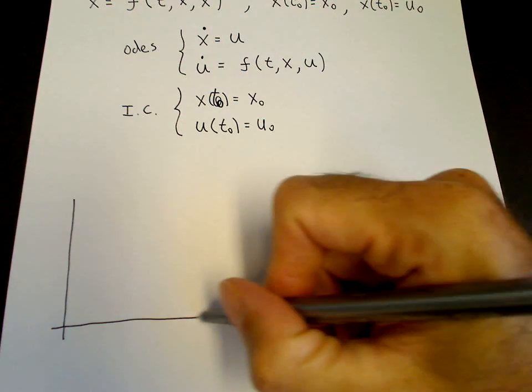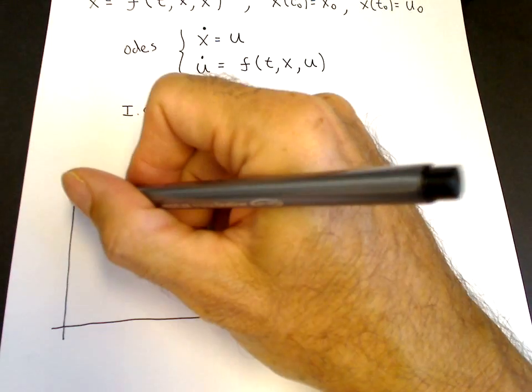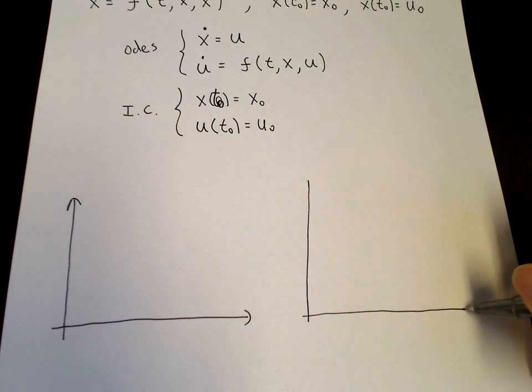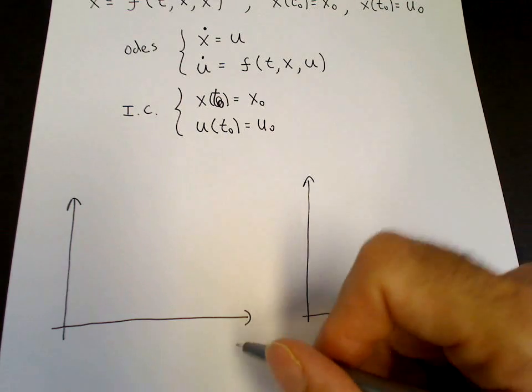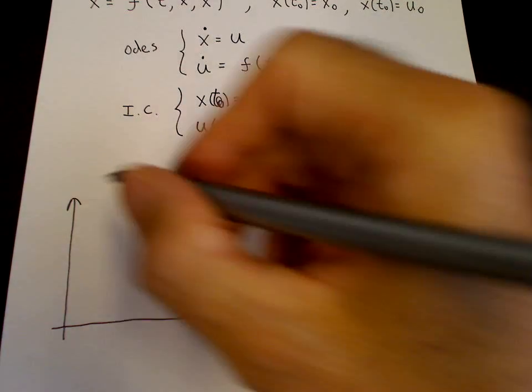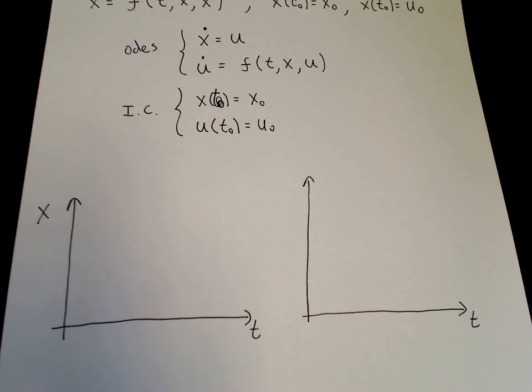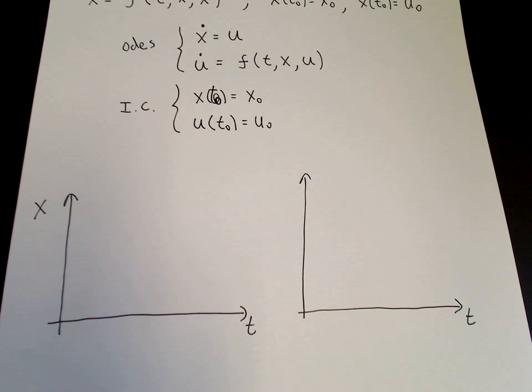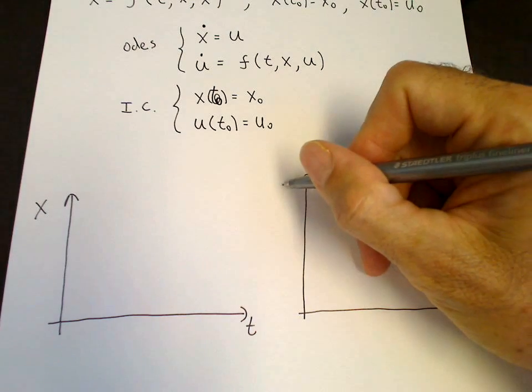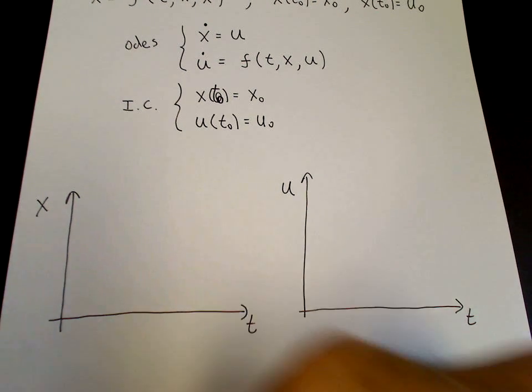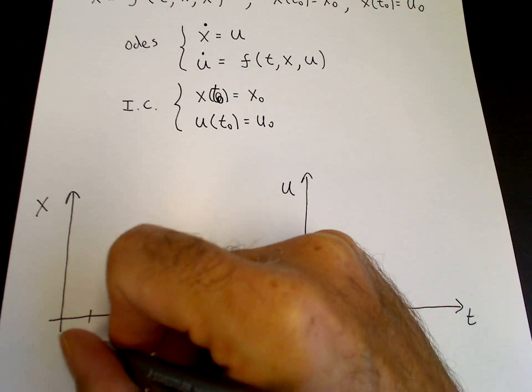So here's the first graph. Here's the second graph. This is the time axis. The first graph will be solving for x. The second graph will be solving for x dot which is what we have called u.